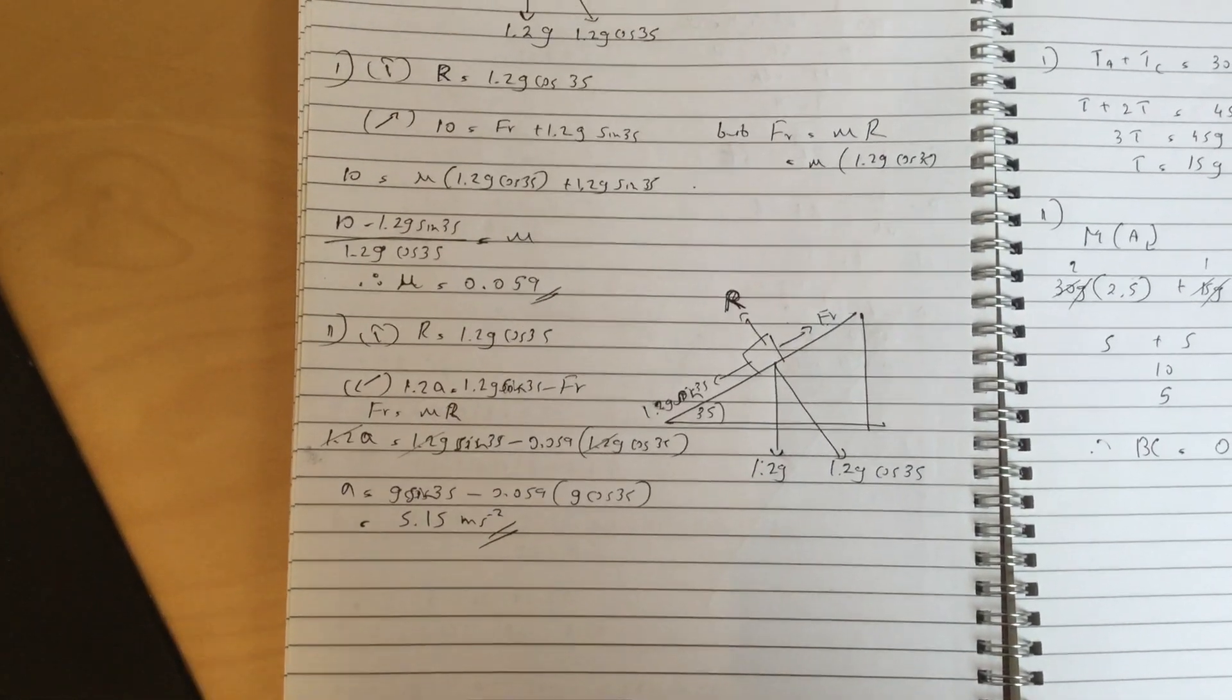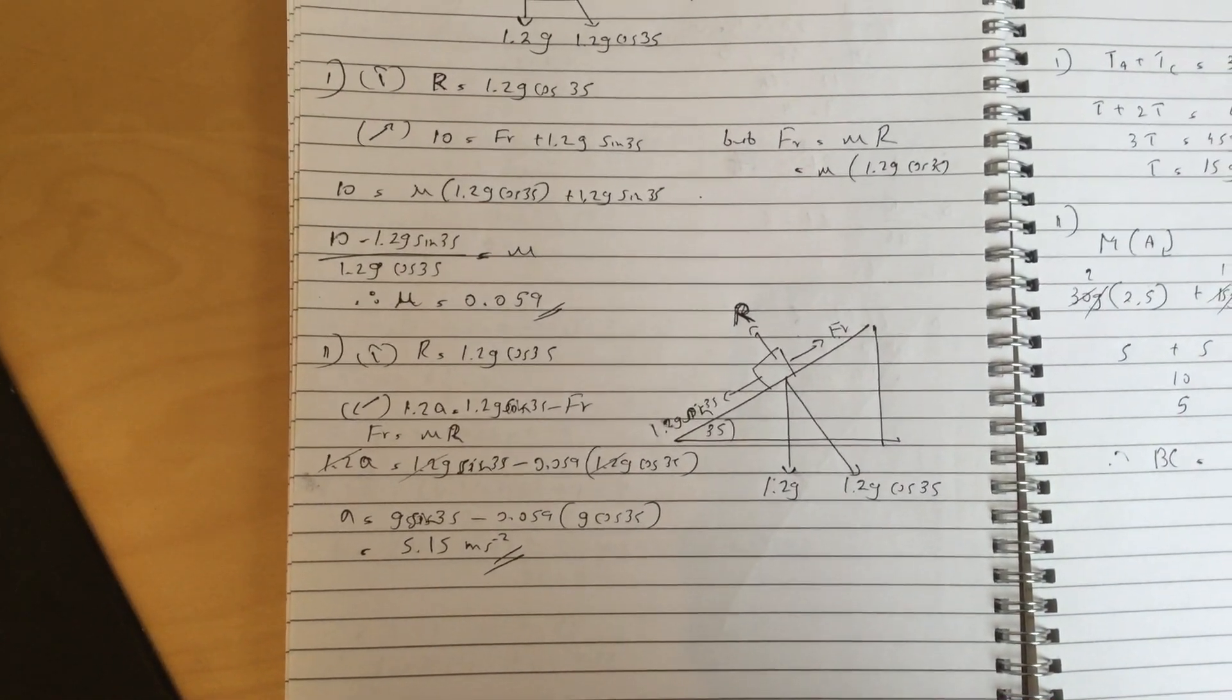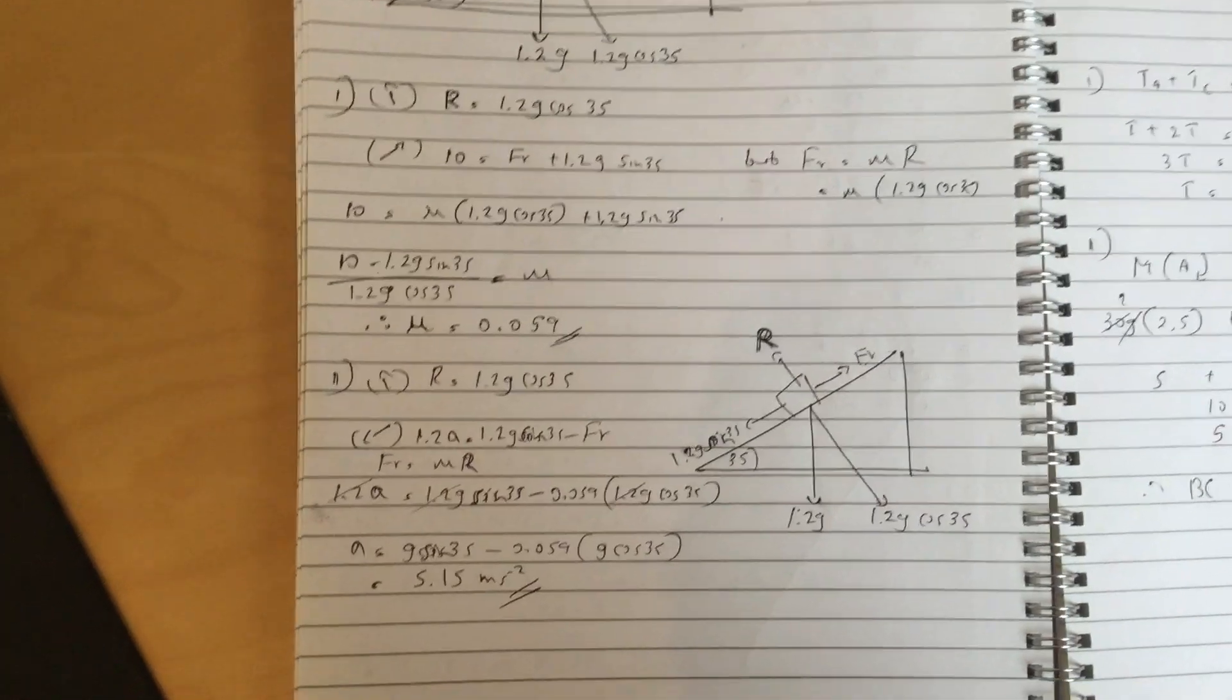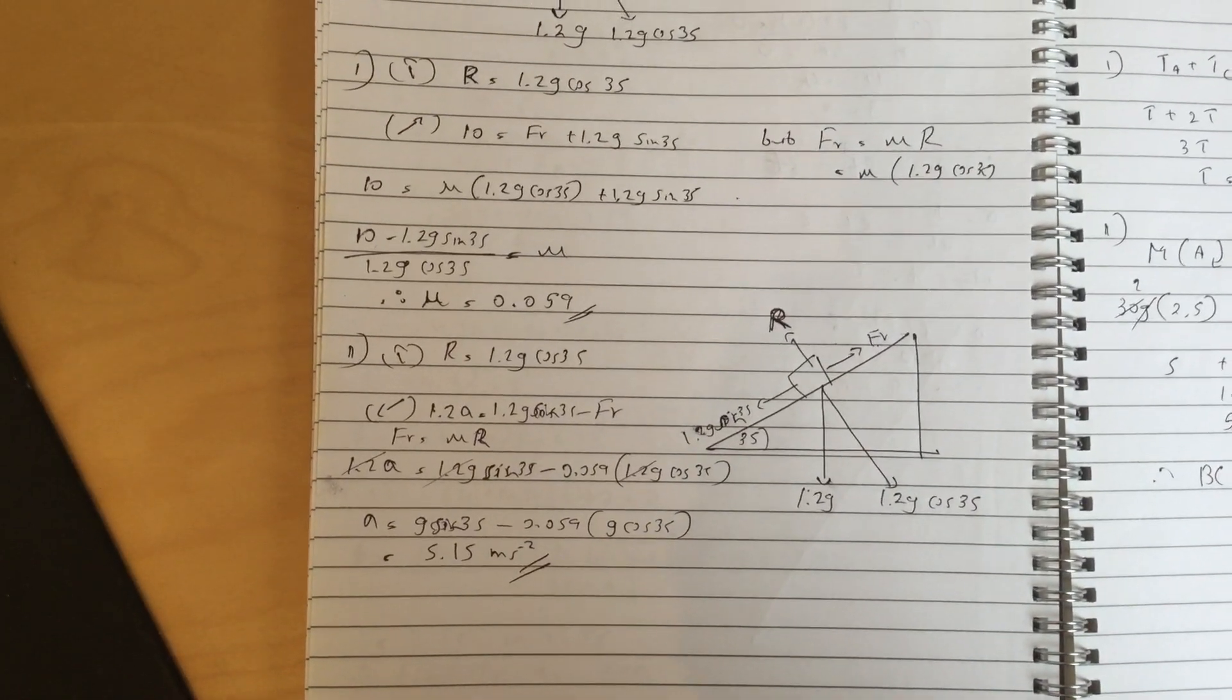And for the second part, so you remove that force, so friction is upwards now, the particle is sliding down, and you get the acceleration to be 5.15 meters per second squared.